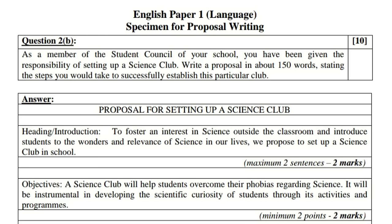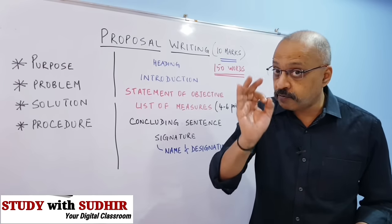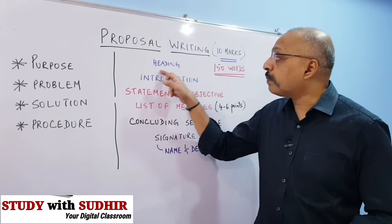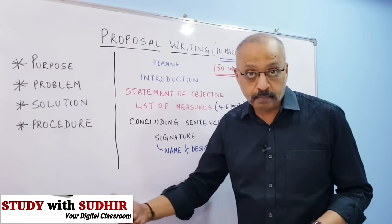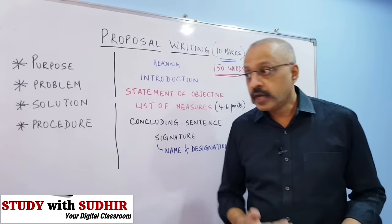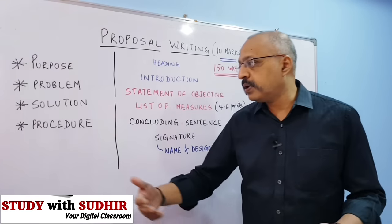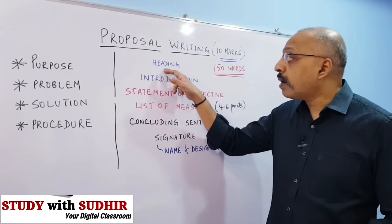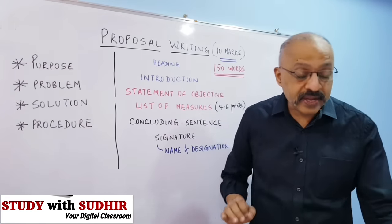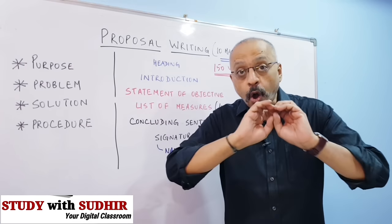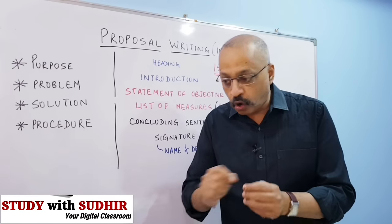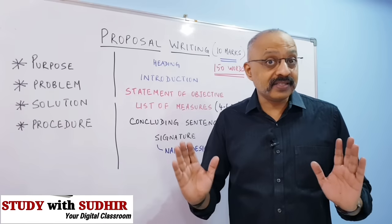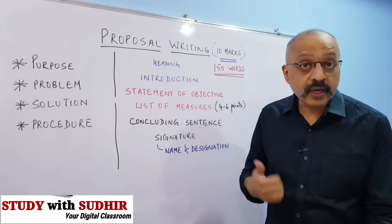So it's pretty clear, and there is a lot of information given in the question itself. When you are writing the heading, please ensure the word 'proposal' must be there. In this case it will be: 'PROPOSAL FOR SETTING UP A SCIENCE CLUB.' It could be a music club, an arts club, a sports club, or a dramatic society — but the word 'proposal' is very important. Please write this in capital letters, all caps, so it's loud and clear, and you can even underline it.